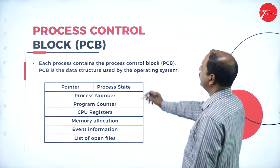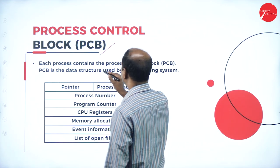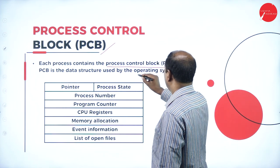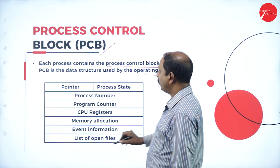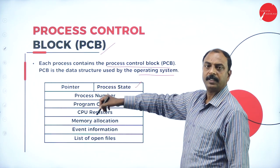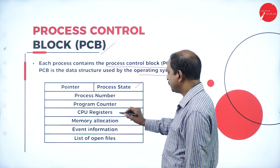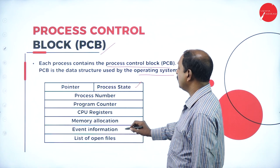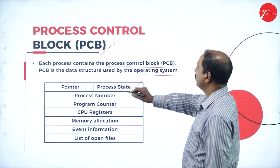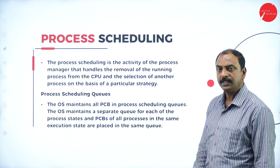In the next slide we will see what is PCB, or Process Control Block. Each process contains a process control block — PCB is the data structure used by the operating system. The structure of a PCB includes: pointers, process state, process number, program counter, CPU registers, memory allocation, event information, and list of open files. These are the components of the PCB. The next concept is process scheduling.